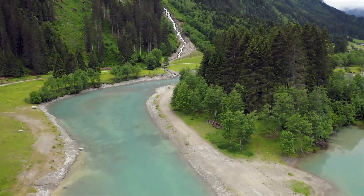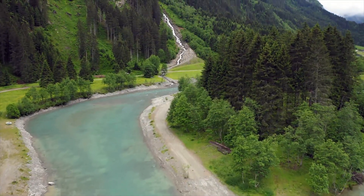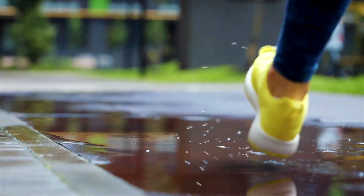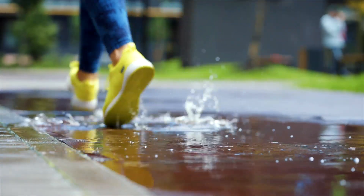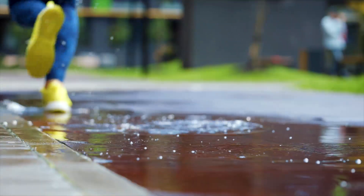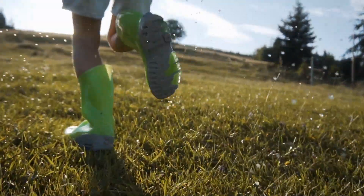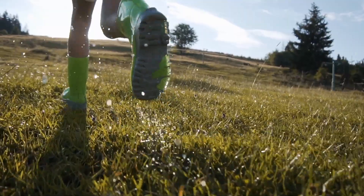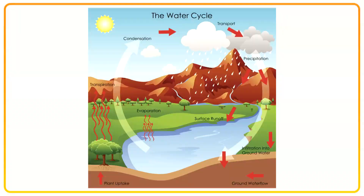This precipitation moves into streams, rivers, lakes, oceans, becomes surface runoff or water that travels over land surfaces such as streets or hills, and seeps underground as groundwater too. From here, the cycle begins all over again.